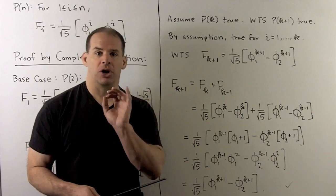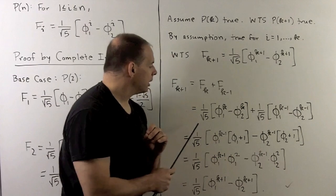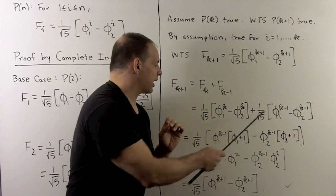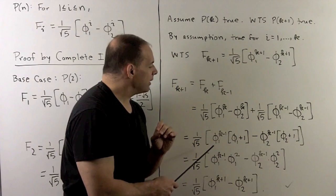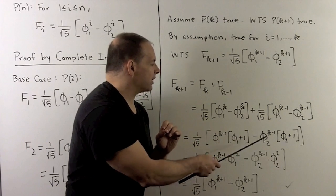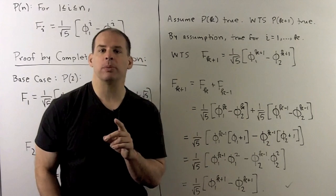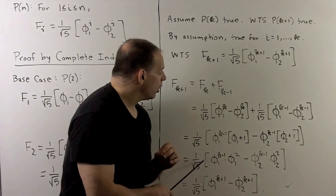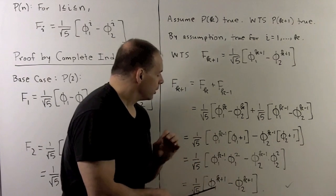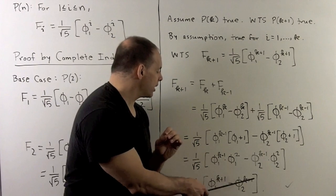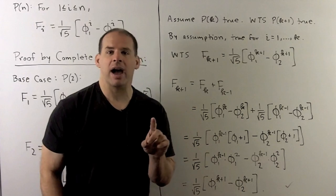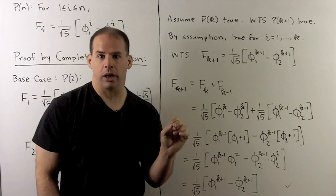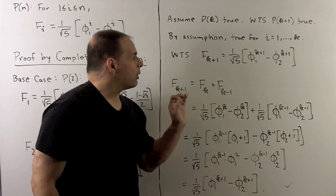We substitute using our assumption. Then we note, I can group the phi 1 terms together and the phi 2 terms together. When we do that, we can factor out a phi 1 plus 1 and a phi 2 plus 1. And we know from the previous board, they're equal to phi 1 squared and phi 2 squared. When we put the exponents together, we'll have phi 1 to the k plus 1, phi 2 to the k plus 1. And now we have the formula, Binet formula for k plus 1. So, that means the induction step holds.